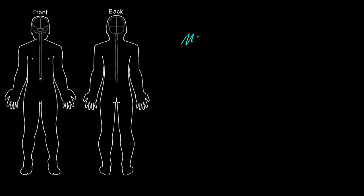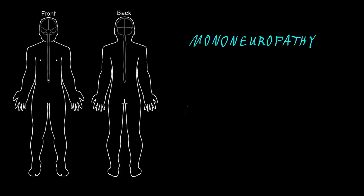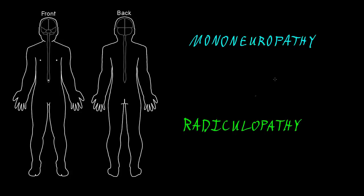In this video, I want to talk about mononeuropathy and also the separate but related concept of radiculopathy. These are both peripheral neurological disorders — that is, a problem in the peripheral part of the nervous system — and more specifically, these are both focal abnormalities of the peripheral nervous system, with an abnormality in one discrete spot.